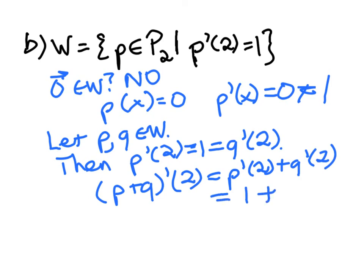But then P plus Q prime at 2 would be P prime at 2 plus Q prime at 2. And now that's 1 plus 1, which is 2. Not 1. So no, it's not closed under addition.